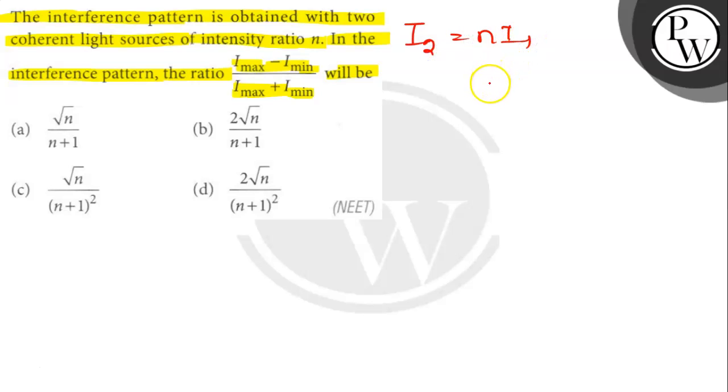Maximum intensity of interference I_max will be the square of (√I₁ + √I₂). Okay,